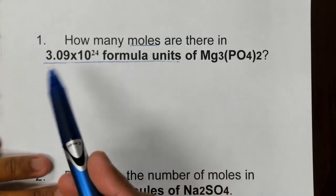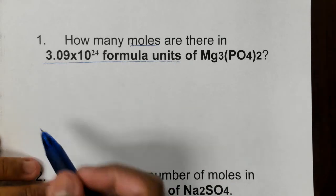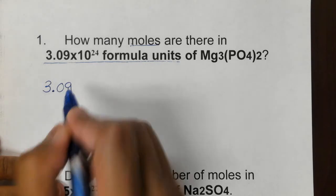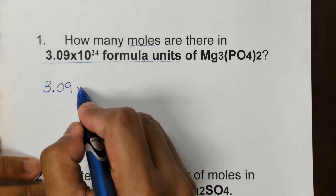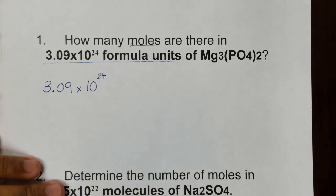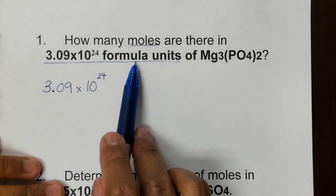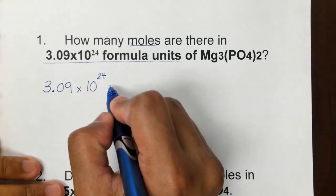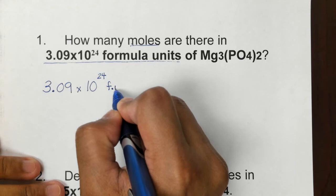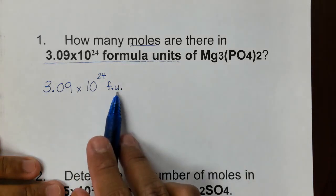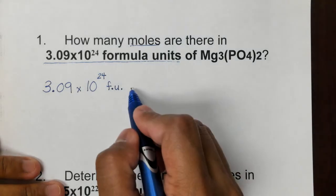3.09 times 10 to the exponent of positive 24 formula units of Mg3(PO4)2. So this is your substance. Now the first step as always is to write our given. So our given is 3.09 times 10 to the power of 24, and we need to put the unit formula units. You can shortcut formula units with the abbreviation f.u.